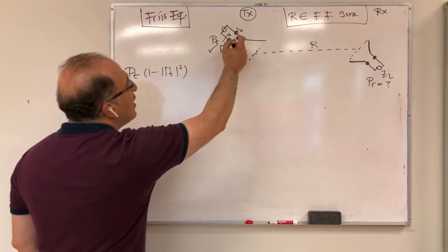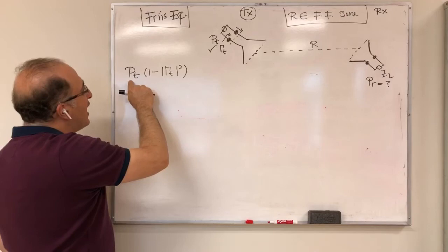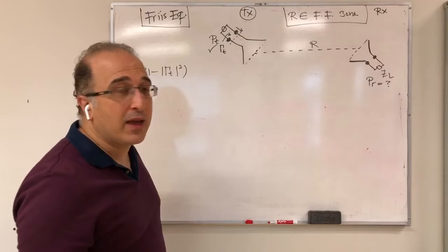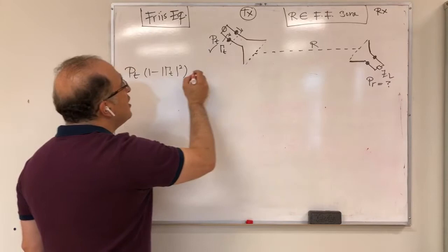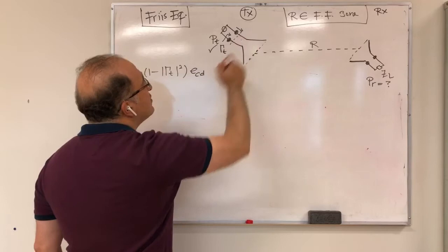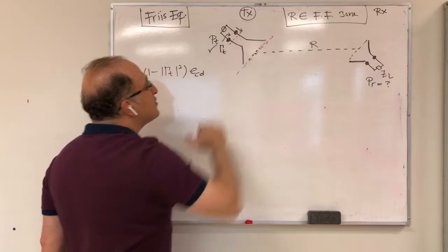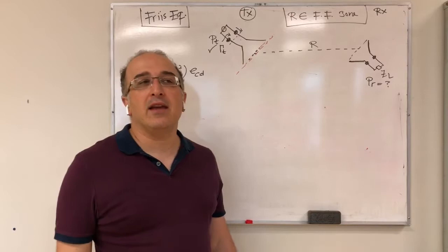This power then experiences the loss of the antenna structure — dielectric and metallic losses — so you multiply by the radiation efficiency of the antenna, e_cd. This gives you the radiated power, taking into account both the impedance mismatch and the losses within the antenna. Now, let's assume the antenna is isotropic to find the power density: you distribute this total power over a sphere of area 4πR².